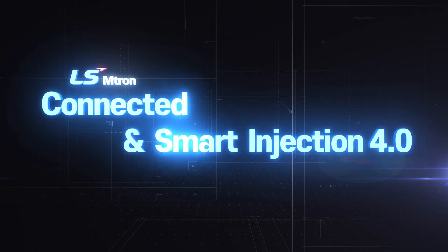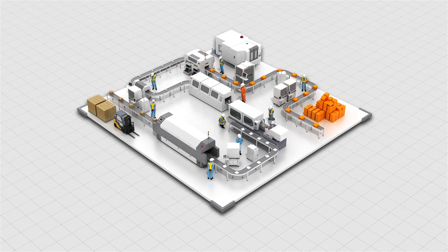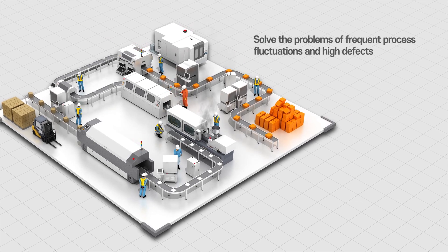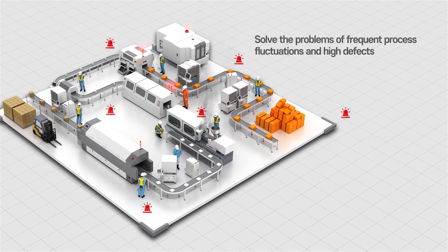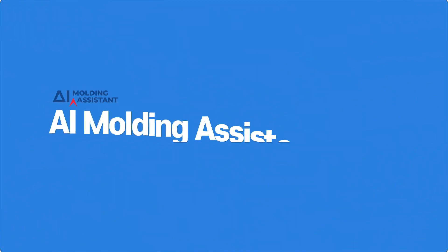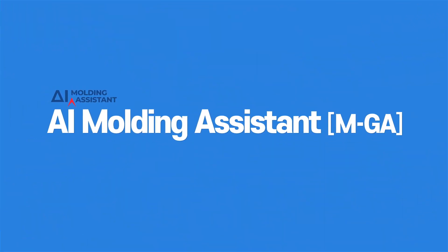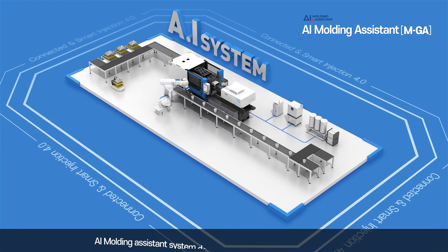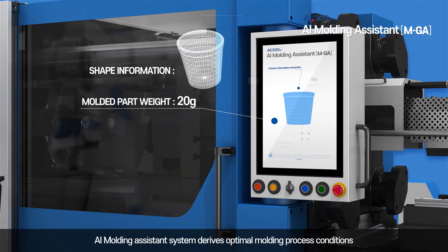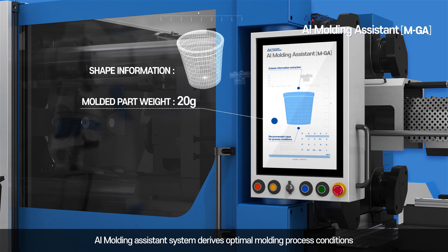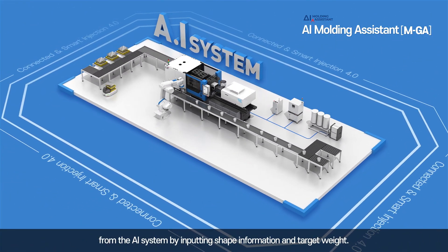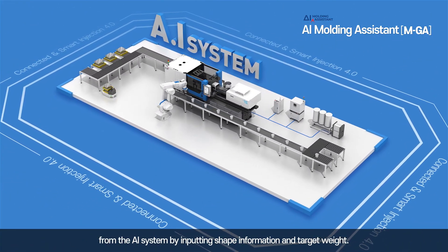LS Emtron smart factory solution can solve the problems of frequent process fluctuations and high defects. The AI Molding Assistant System derives optimal molding process conditions from the AI system by inputting shape information and target weight.